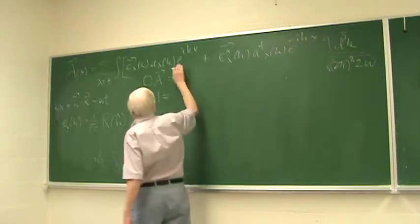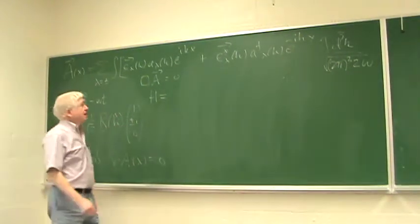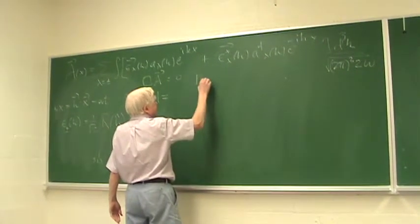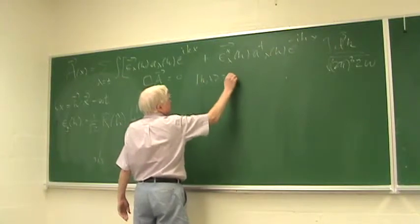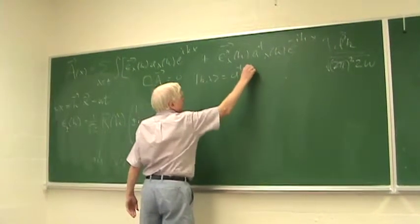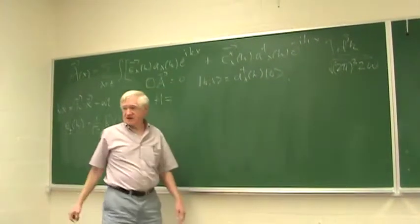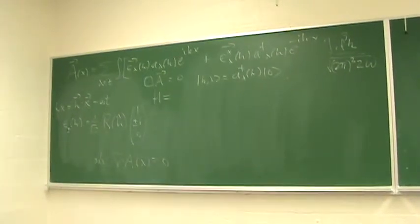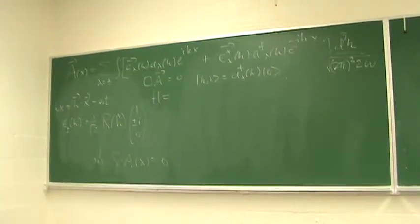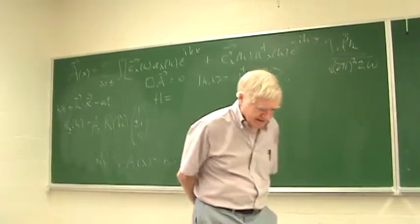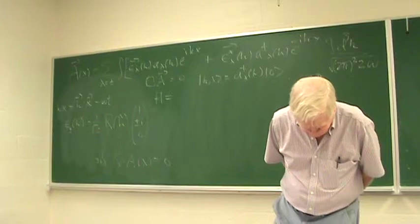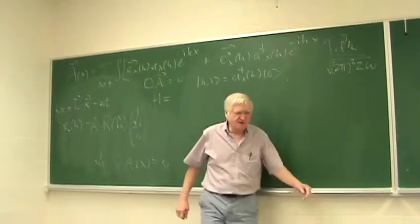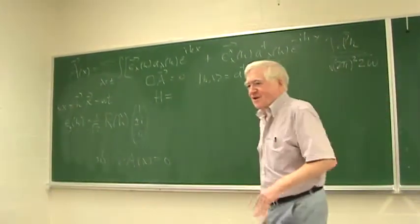These are annihilation and creation operators for a photon. For example, a photon of momentum k and polarization lambda is just a-dagger of lambda k on the vacuum state. So is there any more derivation from it, or do we just write down a form that we want to solve these things? Well, you're quite right to ask — they're good questions. In fact, I think I owe you a better explanation.